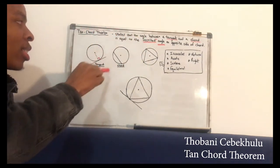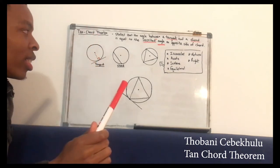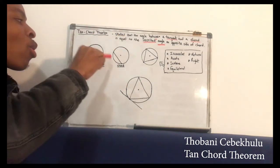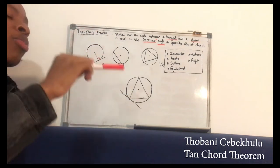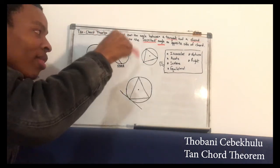So a tangent is a line that touches the circle in one point at which the radius will be perpendicular to that line, and a chord is a line where both ends touch a given circle.